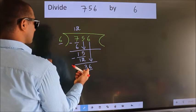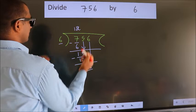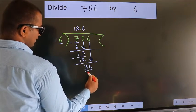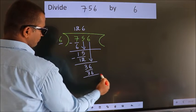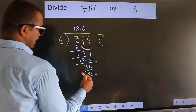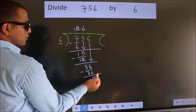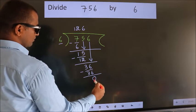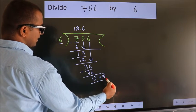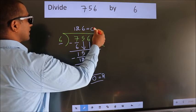When do we get 36? In the 6 table, 6 times 6, 36. Now we subtract, we get 0. No more numbers to bring down, so we stop here. This is our remainder. This is our quotient.